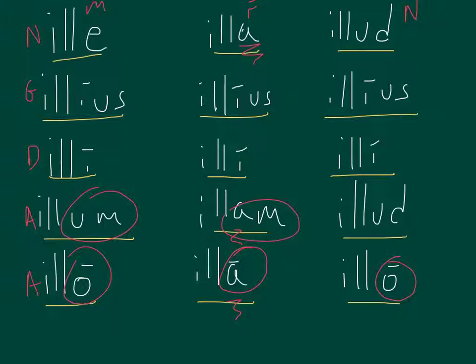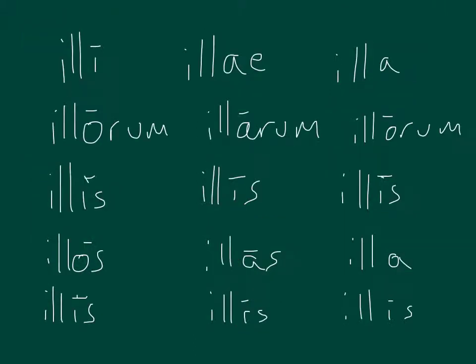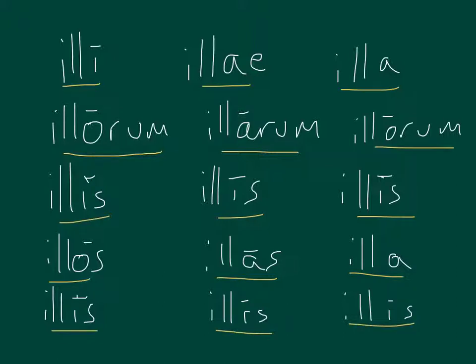And the plural of Ille, we have Illi, illi, illa. Illorum, illarum, illorum. Illis, illis, illis. Illos, illas, illa. Illis, illis, illis. And those are plural, so this is going to mean those. So that is this, these, that, and those. You'll notice a lot of the same patterns here in those.